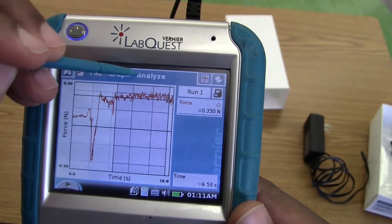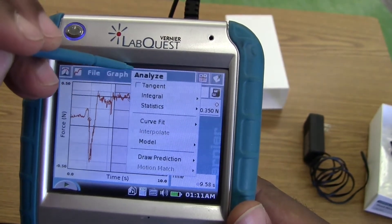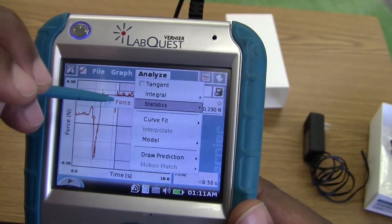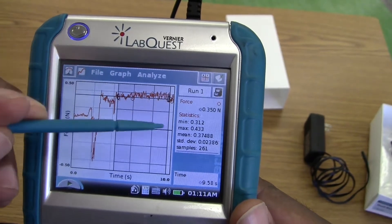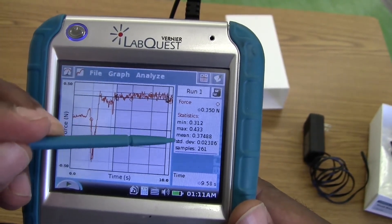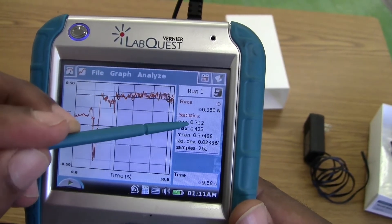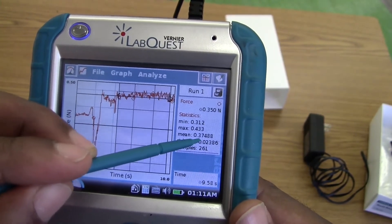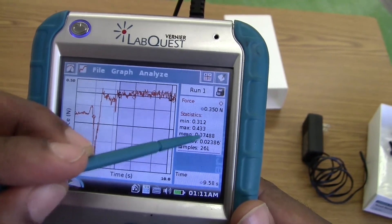Then we go to Analyze, go to Statistics, click on Force, and then it'll tell us the statistics during that time. So it tells us the minimum, the maximum, and the mean. We know that the average amount of friction is here during the time that we highlighted.